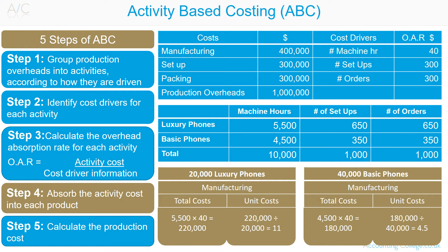Step 4: Absorb the activity costs into each product. This can be done on a total production per product or on a per unit of product basis. If there are 20,000 luxury phones produced and 40,000 basic phones produced, we calculate the total activity costs and activity costs per unit. For manufacturing of luxury phones: take the 5,500 machine hours, multiply by the OAR of $40, then divide by 20,000 units to get the per unit cost.